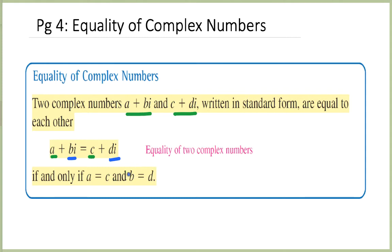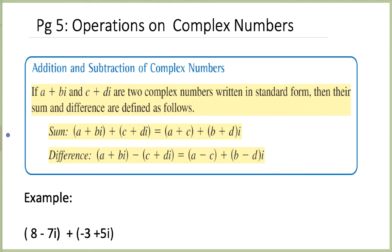More important for us are the operations we perform on complex numbers: addition, subtraction, multiplication, and division. For addition and subtraction of two complex numbers a plus bi and c plus di, we do normal addition and keep the idea of adding terms with the same expression together — likewise for differences. Let's look at the examples.